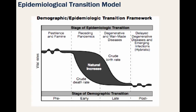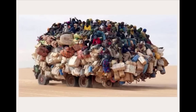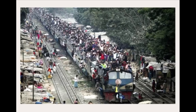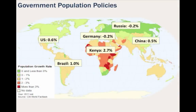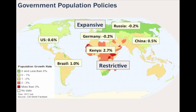Even though growth rates have declined worldwide, population growth and population concentrations are not even around the world. Governments have therefore established population policies for their respective needs. Expansive population policies are used where governments want to increase growth rates, while restrictive population policies have been enacted to reduce growth rates. Some nation-states, such as Japan, have also sought to preserve their cultural identity and restricted immigration.